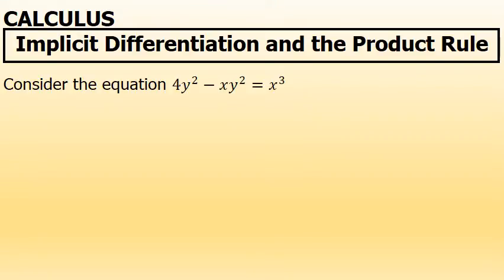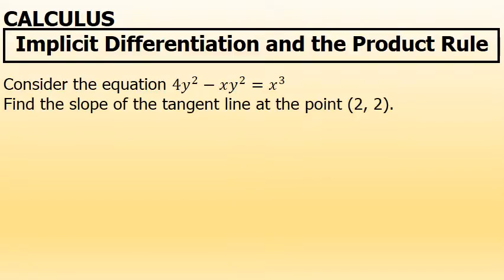If you are asked to consider the equation 4y² minus xy² equals x³ and find the slope of the tangent line at the point (2, 2), you would have to take the derivative. The derivative of this equation with respect to x requires implicit differentiation because there are two factors of y. The term xy² will require the product rule. Let's get started.